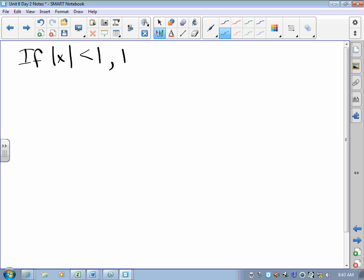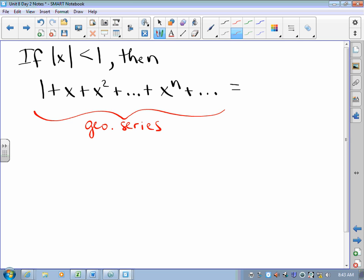If the absolute value of x is less than one, then one plus x plus x squared plus and so on plus x to the n and so on. Well, if the absolute value of x is less than one, then this thing is a geometric series, and since this thing is a geometric series, it converges for absolute value of x less than one, and what is that sum? It is one over one minus the ratio.